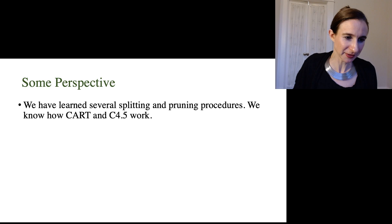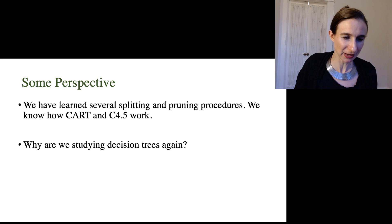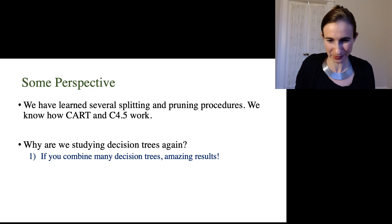Okay, so just to give you some perspective, we've learned several splitting and pruning procedures. We know how CART and C4.5 work, and so why are we studying decision trees again? And so first of all, if you have a whole bunch of overfitted trees, and you average them together in different ways, they actually produce amazingly powerful machine learning models. And so I'll talk about those in the next few lectures, when we talk about random forests and boosted decision trees.